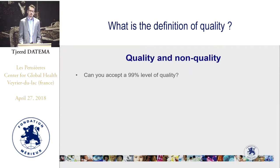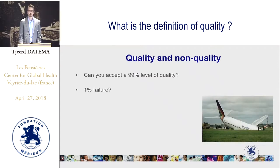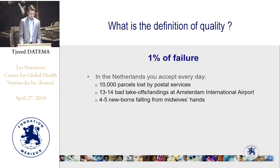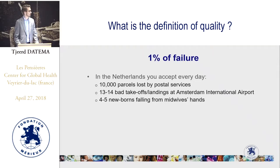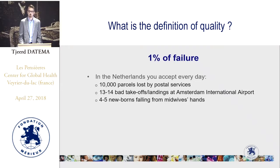When I start to talk about quality, I always start with this question: can you accept in daily life a 99% level of quality? People always tend to respond positively initially. But when you turn it around, you say you accept 1% of failure. For example, in the Netherlands with 1% of failure, you accept every day 10,000 parcels lost by postal services, 13 or 14 bad landings or takeoffs from Amsterdam airport, and 4 to 5 newborns falling from midwives' hands.